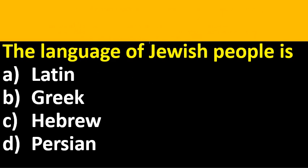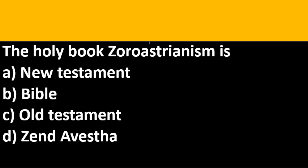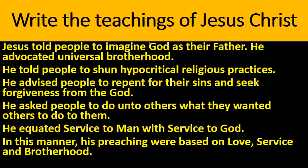The language of Jewish people — options are Latin, Greek, Hebrew and Persian. The language of Jewish people is Hebrew. The holy book of Zoroastrianism — options are New Testament, Bible, Old Testament, or Zend Avesta. The correct option is Zend Avesta.